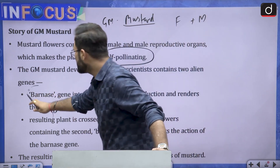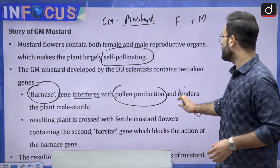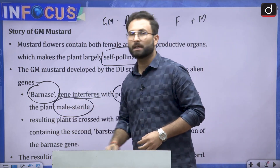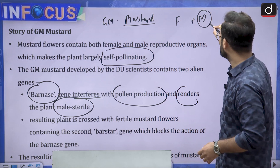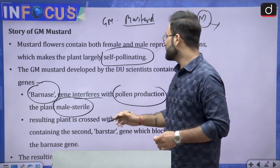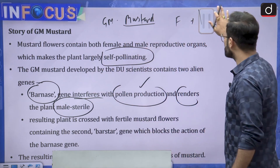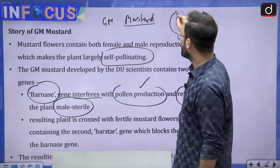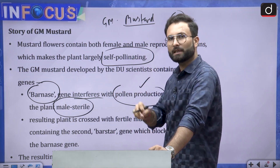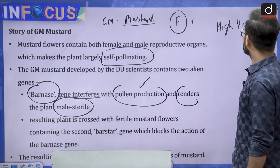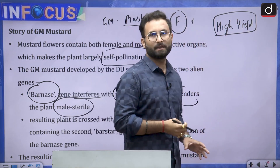The first is the barnese gene, which is introduced into the plant and interferes with pollen production, rendering the plant male-sterilized. As mentioned, both male and female reproductive organs are present. They target the male organ, sterilize it, and pollen production is thereby interfered. This resultant plant then undergoes cross-pollination, and the resulting plant has a high yield — because the genetic change made is for a high-yielding variety.